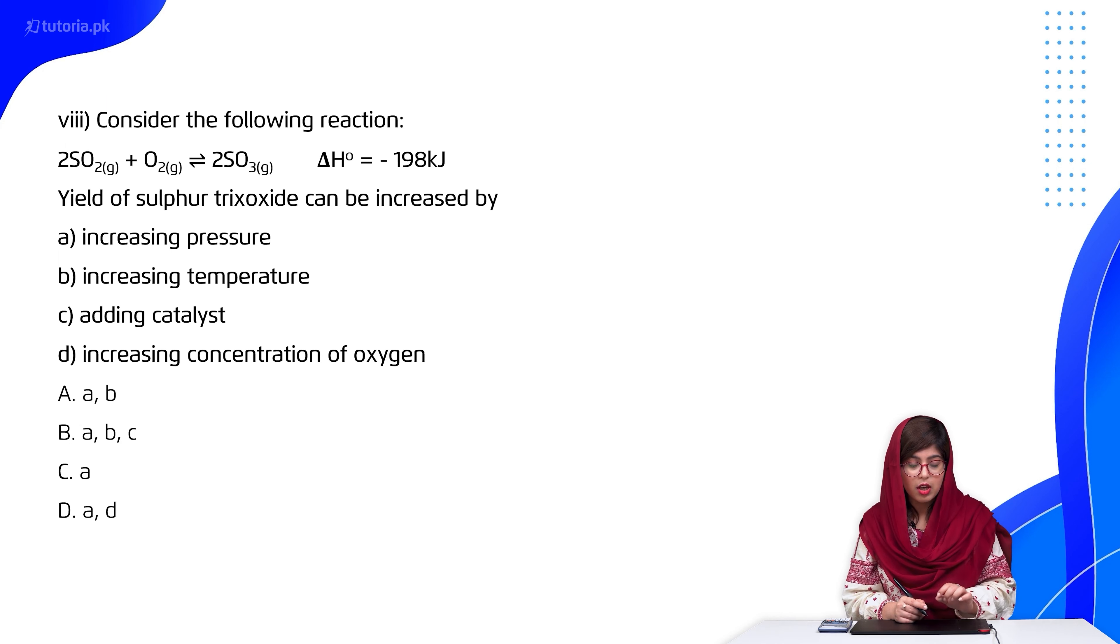So students, when you increase the concentration of oxygen, your reactant concentration increases and more product will be generated. So D is considerable, and increasing pressure. Increasing temperature? No, because it's an exothermic reaction. Adding catalyst? Catalyst has no effect on yield. So it is A and D.